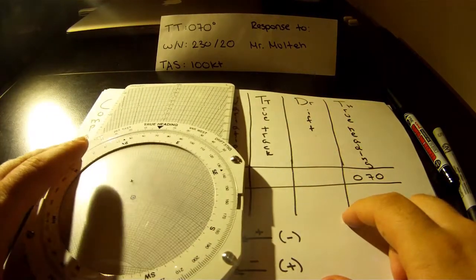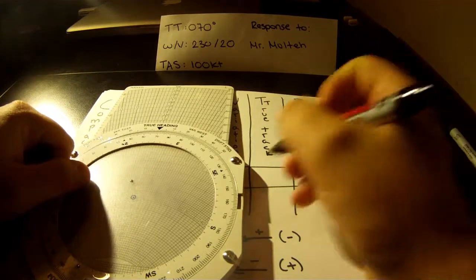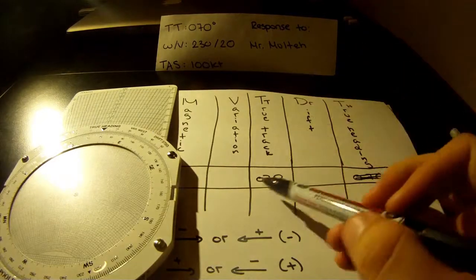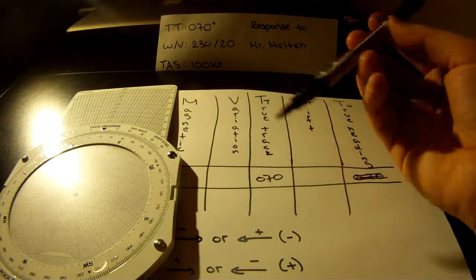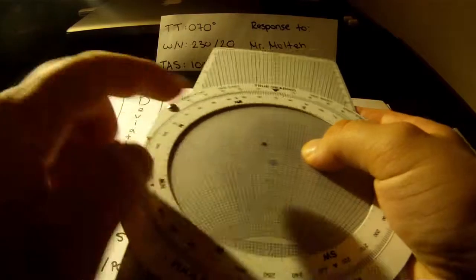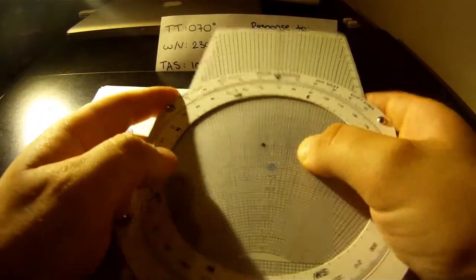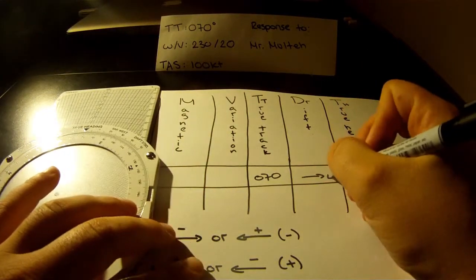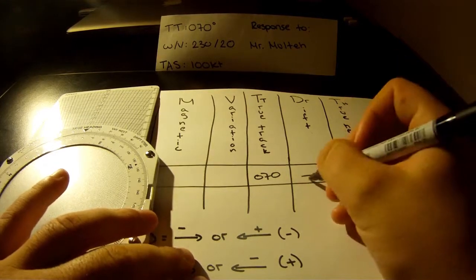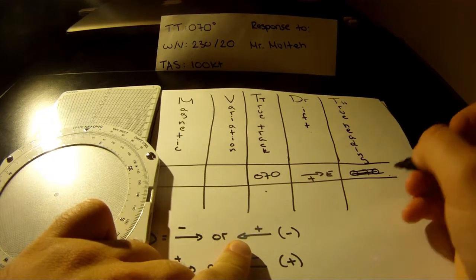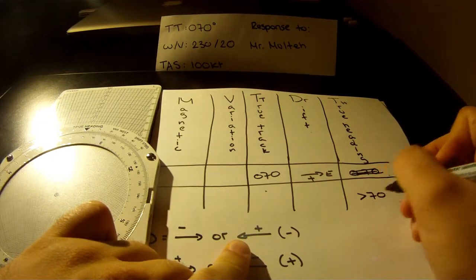Sorry — I actually got this wrong. This label should say true track here: 070. My mistake. And actually, we want to go to true heading. Now, we know that the correction is going to be pretty small, so it's very likely to stay east. We're going to put a certain value east, so this is going to be positive. That means that 070 is smaller than whatever the true heading is — so true heading has to be bigger than 070 degrees.